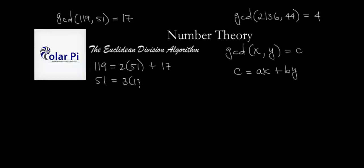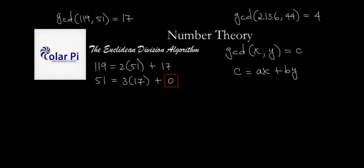51 equals 3 times 17 with remainder 0. The process is very short here — unusually so, since it's more commonly longer than two steps. We know we're done because we achieved a remainder of zero. Anytime you write a remainder of zero in the sequence of steps, the process terminates and the greatest common divisor is the remainder from the previous line, which is 17. This makes sense since 119 = 7×17 and 51 = 3×17.